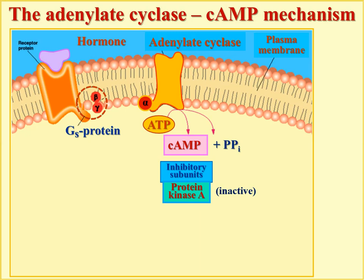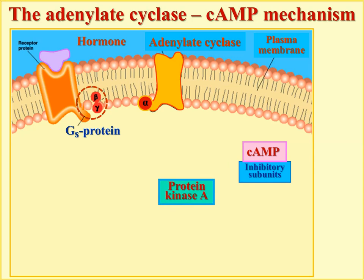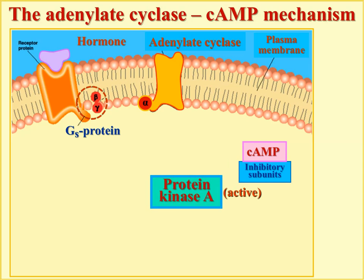Two phosphate groups are removed as inorganic phosphate (Pi). Cyclic AMP molecules then activate protein kinase A by binding to its inhibitory subunits — there are four total, requiring one cAMP molecule each. When cAMP binds to the inhibitory subunits, the active catalytic subunits of protein kinase A become separated and free, making protein kinase A active.